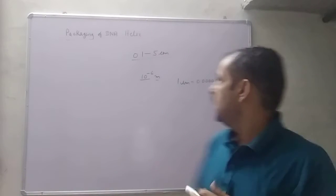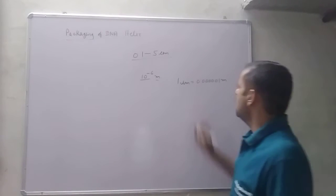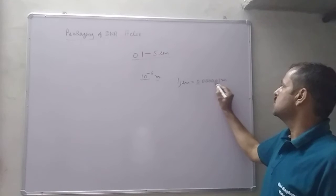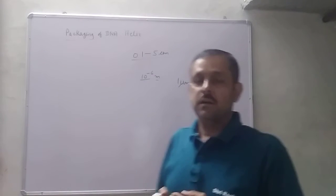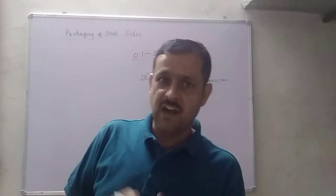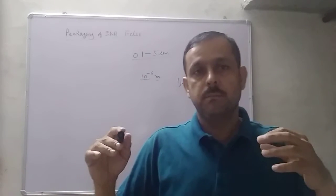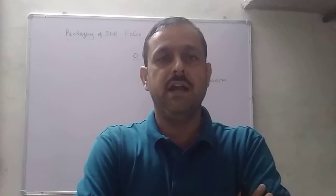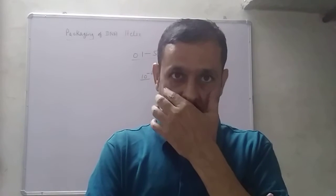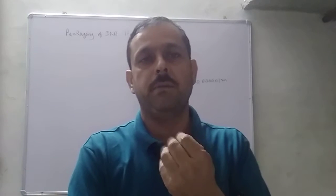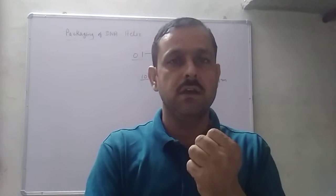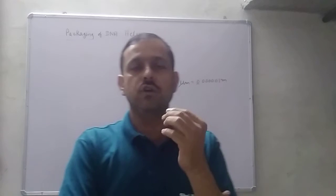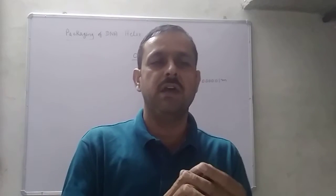1 μm is equal to 0.0000001 meter. Now if we want to calculate the length of DNA, then we have to find out how many base pairs are present. DNA की जो length होती है वो Kb यानि kilo base, या base pair यानि BP में calculate होती है। तो normally दो base pair के बीच में distance कितनी होती है।